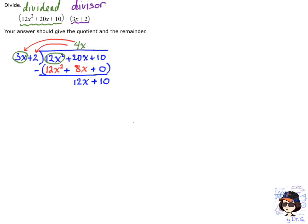So now I've got 12x plus 10. And I'm still dividing. So I look at the leading terms again. So 12x and 3x. We divide 12x by 3x. Well, another way to think of it is, what do I have to multiply 3x by to get 12x? And the answer is just 4.